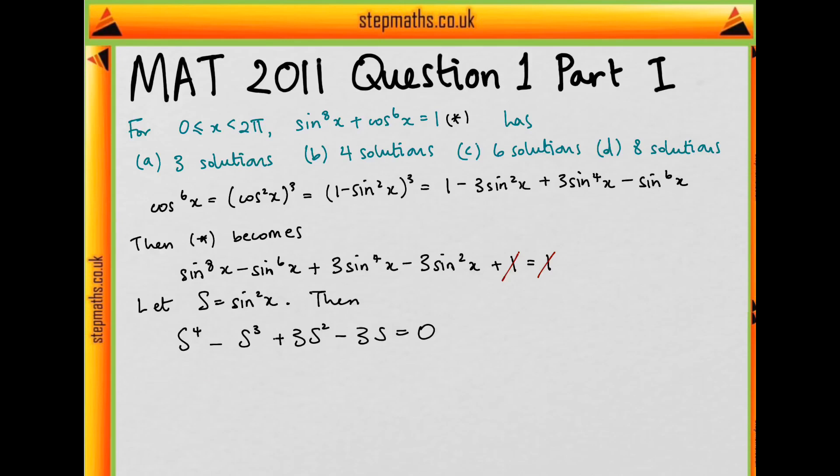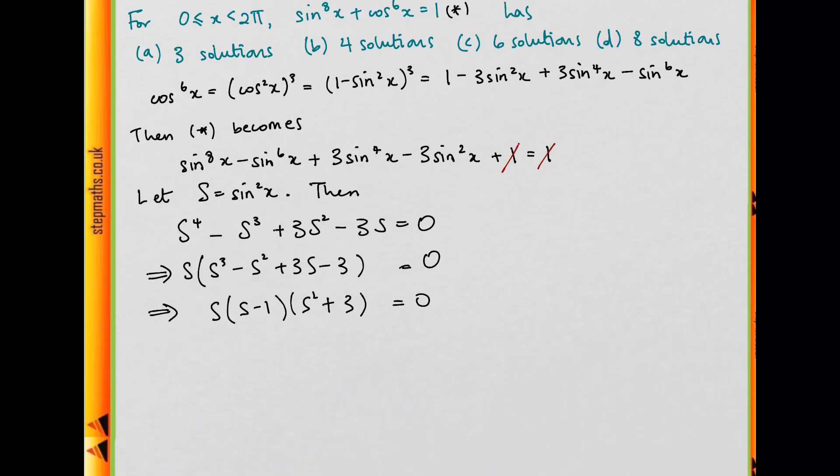Well, then, our equation is going to become this, so s to the 4 minus s cubed plus 3s squared minus 3s. And we can see that s is going to factorize out of all of these terms, so we'll have this. And what about this cubic? Well, we can see that if we had s equals 1, then that would be a root to this cubic, right? Because then we'd have 1 minus 1 plus 3 minus 3. So we can use the fact that s minus 1 is going to be a factor to this cubic to factorize it. And when we do, this is what we see. So we have roots s equals 0 or s equals 1, because this isn't going to give us any real answers.